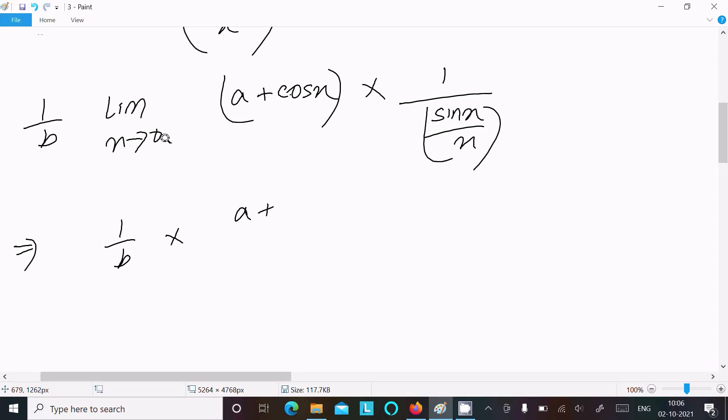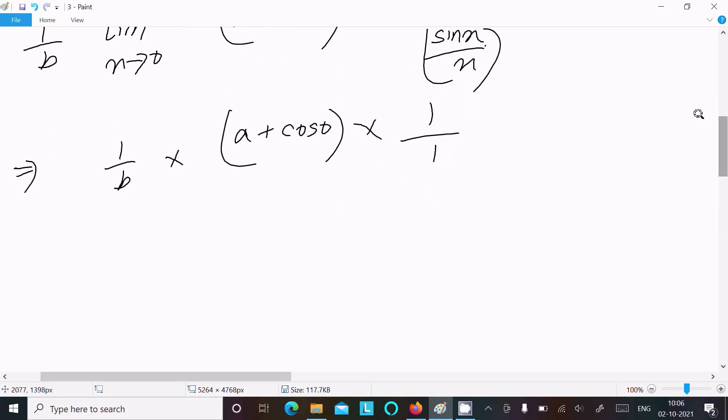As x tends to 0, cos 0 equals 1, and sin x by x equals 1. So we have 1/b times (a + cos 0), where cos 0 equals 1.